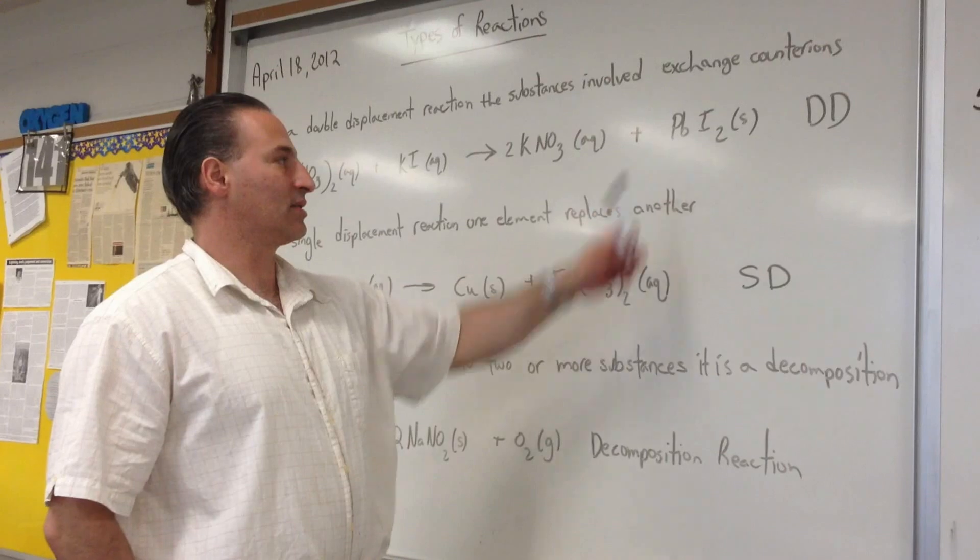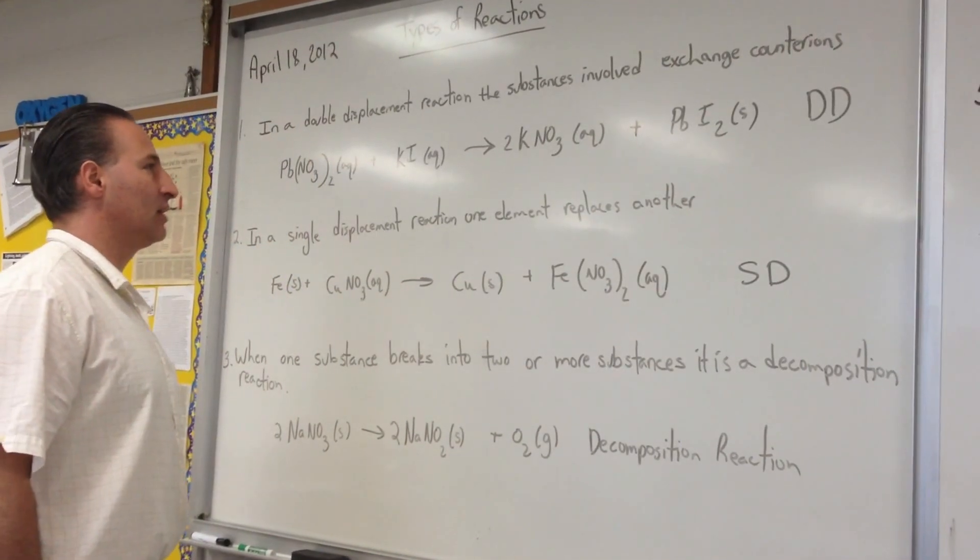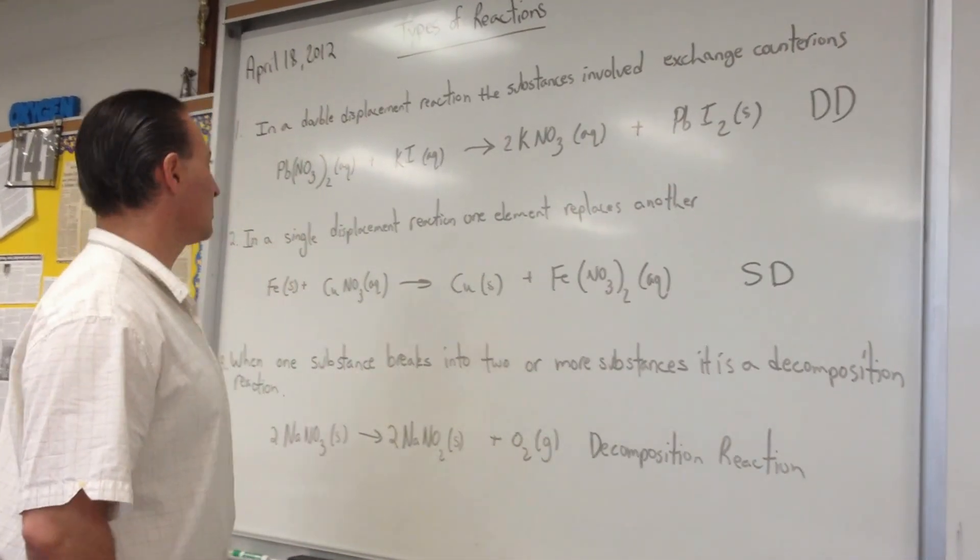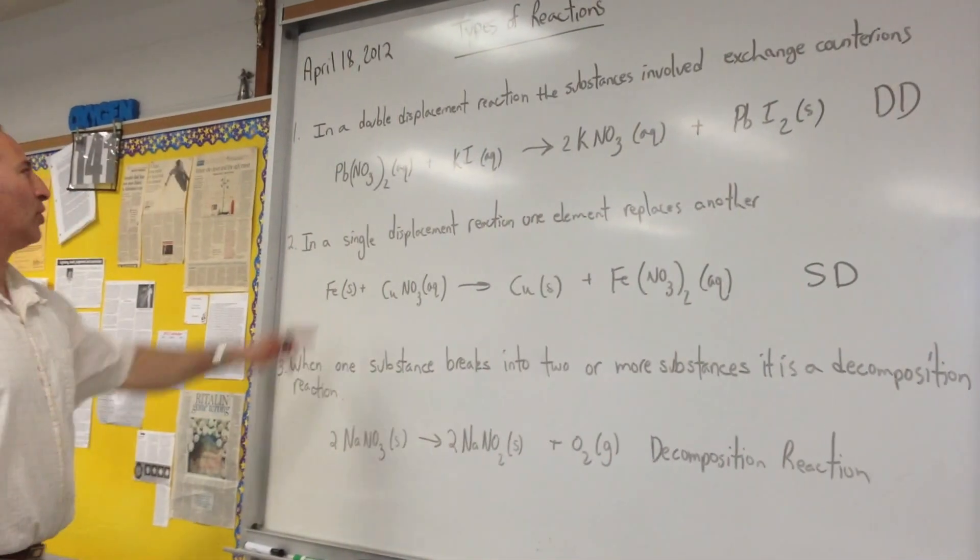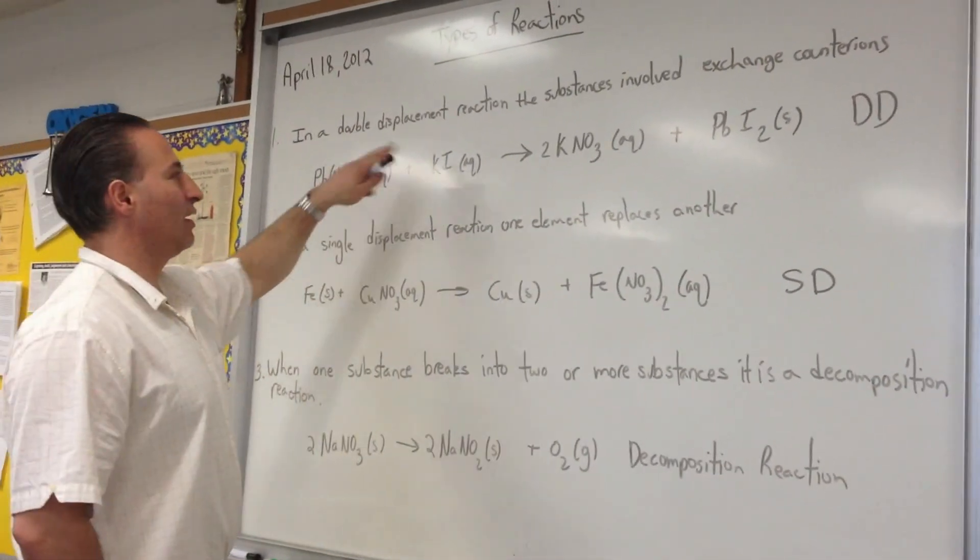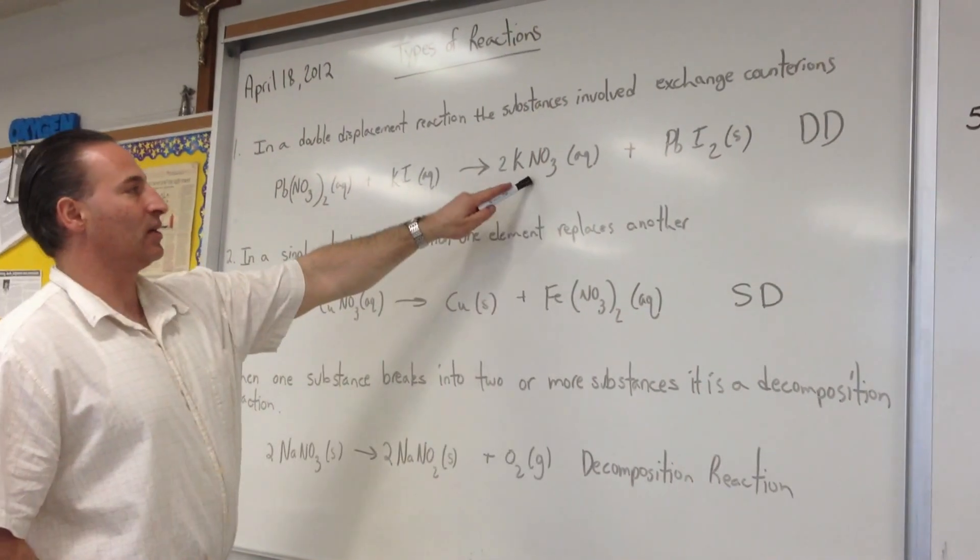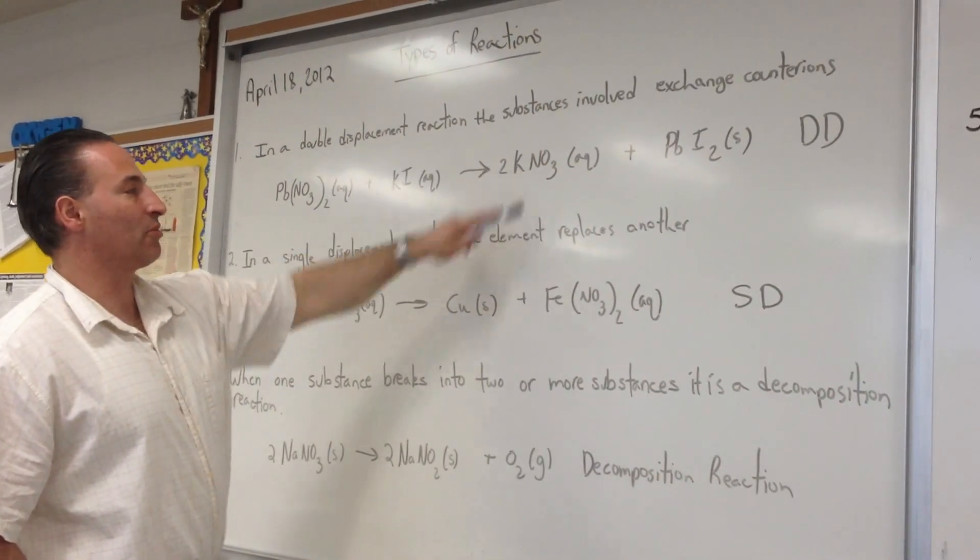And one of the products actually precipitates, lead iodide. So that's a double displacement. What happens is both cations exchange their anions. Mind you, potassium nitrate is soluble, so it doesn't form a precipitate.